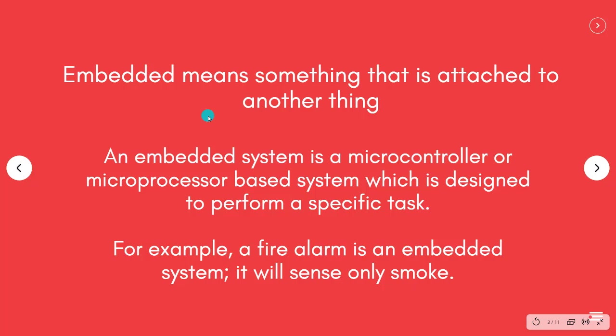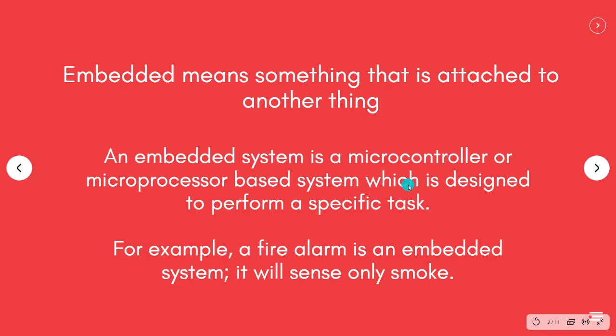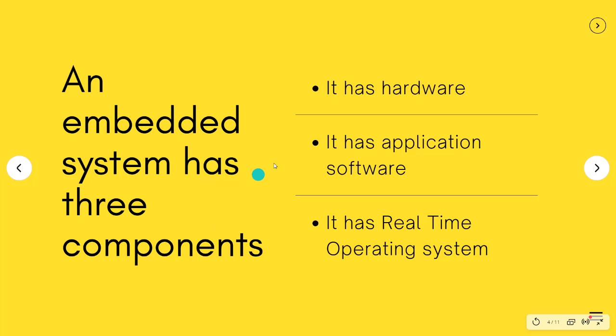The word 'embedded' means something which is attached with another. A mobile phone has many parts — RAM, ROM, camera — everything integrated into a single sheet. An embedded system is a microcontroller or microprocessor-based system designed to perform a specific task. For example, a fire alarm senses only smoke. Real-life examples include Arduino and Raspberry Pi, where the microprocessor, analog inputs, analog outputs, and digital components are all on a single board.